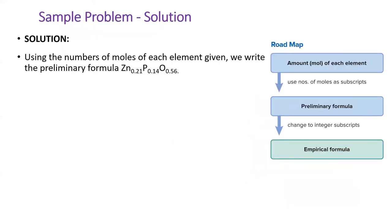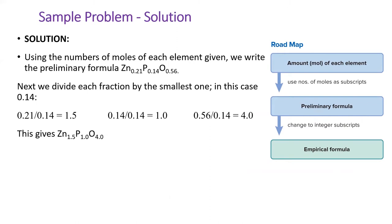To solve this problem, we use the moles of each element to write a preliminary empirical formula. Then, we divide each number in the formula by the smallest number in the formula, which is 0.14. This gives us a new formula, which is composed of much nicer numbers.